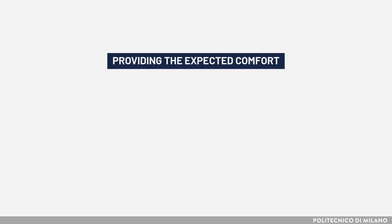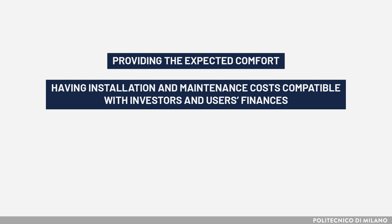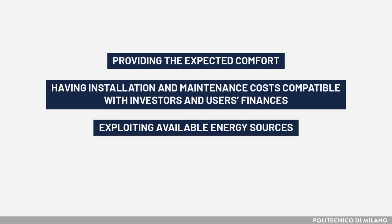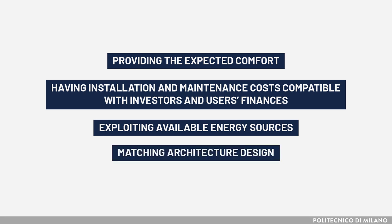As we have seen, multiple combinations of components and schemes are available. The right HVAC plan to serve a given space must fit several requirements: providing the expected comfort according to the occupants' wishes and activities; having installation and maintenance costs compatible with investors' and users' finances; exploiting available energy sources in the best way; and matching architecture, design, and building constraints. These are the milestones to follow in every project.